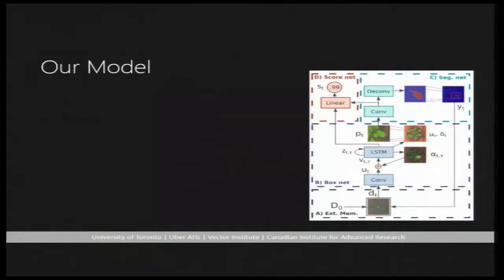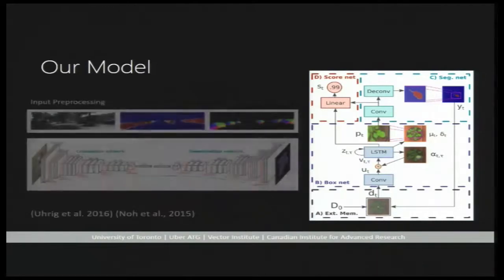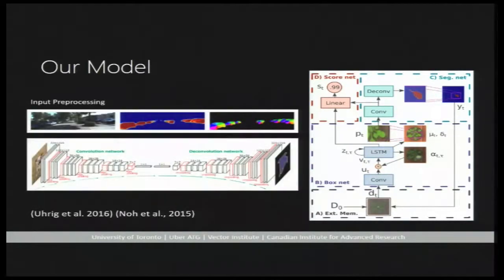Our proposed model is a recurrent neural network. Each time it attends to one instance and outputs a segmentation mask. For input pre-processing, we pre-trained a fully convolutional network to output foreground segmentation and angle map to facilitate instance awareness.